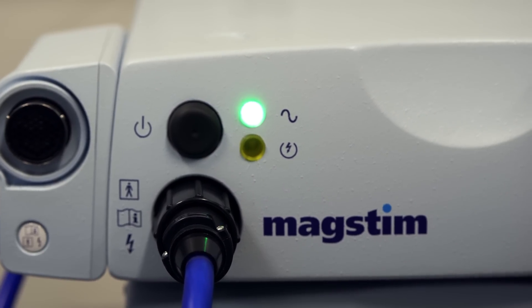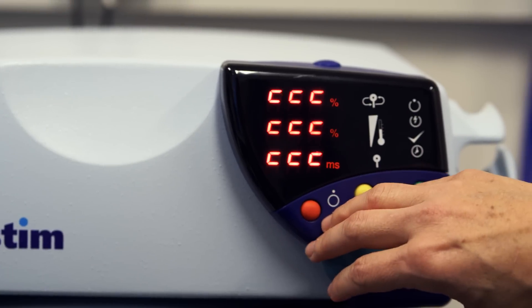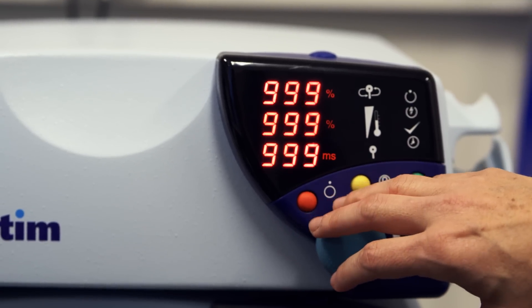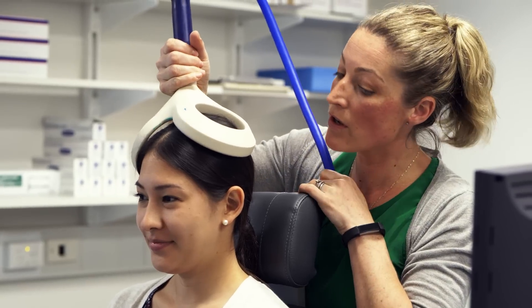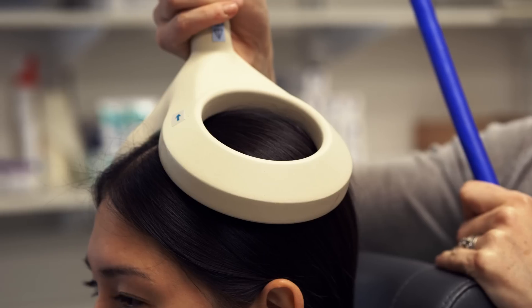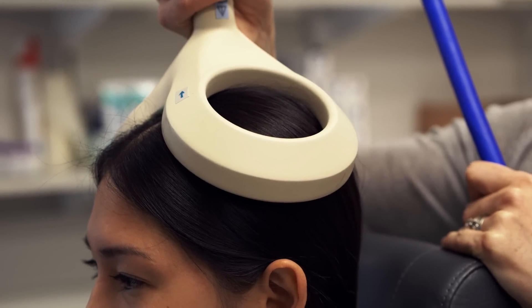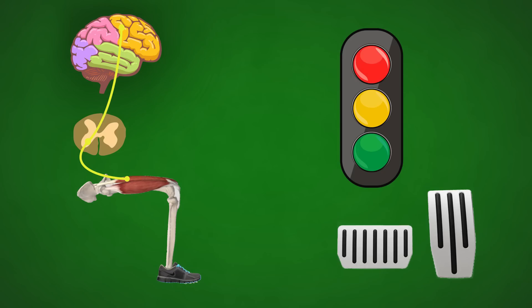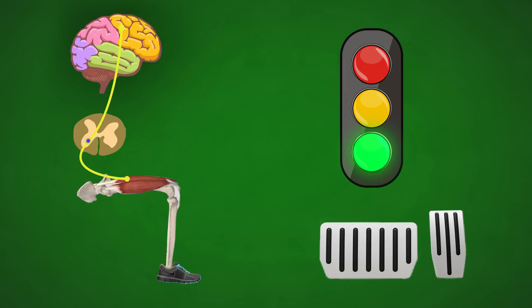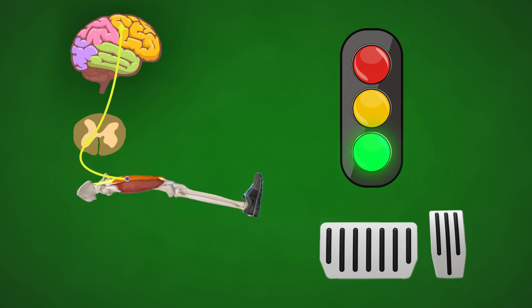The way I did that was to use equipment called transcranial magnetic stimulation, which really probes the motor cortex. You can look at the drive to the muscle — your brake and your accelerator — so your amount of inhibition and your amount of excitation, and it's a balance.